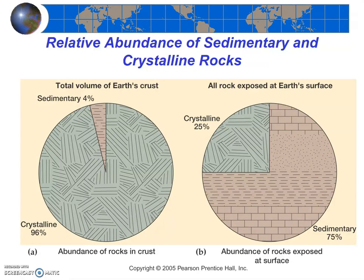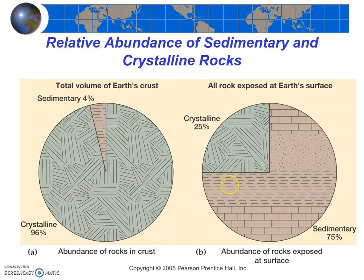This diagram shows that most of the rocks in the Earth's crust are either igneous or metamorphic rocks — there are very few sedimentary rocks if we consider the entirety of the crust. But if we only consider the rocks exposed at the surface, most are sedimentary rocks. This makes sense because sedimentary rocks form at or near the surface, while metamorphic rocks and intrusive igneous rocks form deep beneath the Earth, though extrusive igneous rocks do form near the surface.